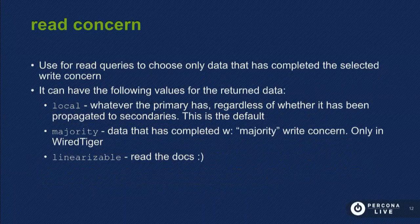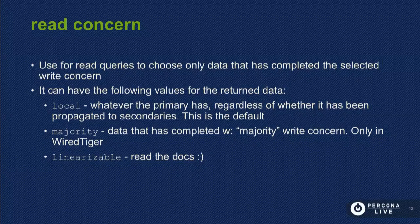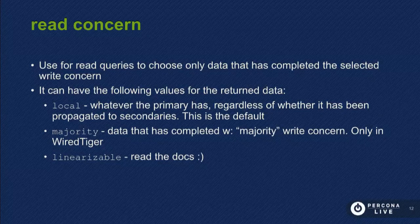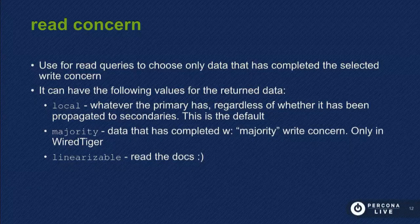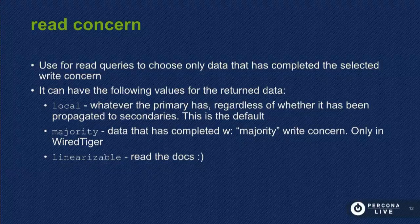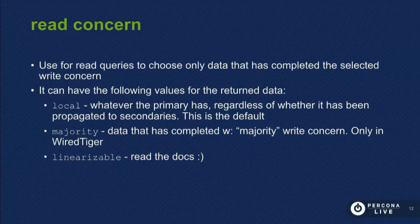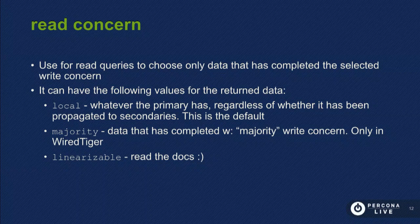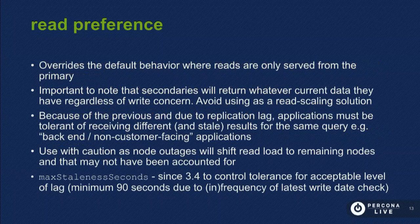I'll briefly mention read concern, because I personally have not dealt with it too much. Local just says if this is written to local, give it to me from the primary. Majority means if the data has been propagated to the majority and returned true from a write concern query, then return it to me. I would refer you to the documentation for linearizable, as that was a bit complicated for me to fully understand.